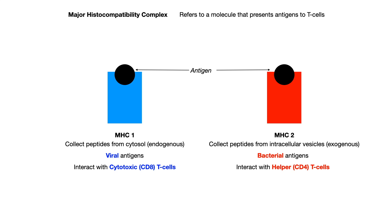If you're wondering what this CD business is, when you see CD followed by any number, all that refers to is the expression of some compound or marker on a cell. So when we say CD8 T cells, we're saying T cells that have this little thing sticking out on them that we call CD8. It's just a way to identify various cells.